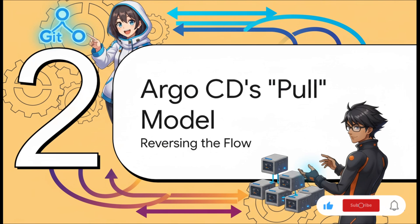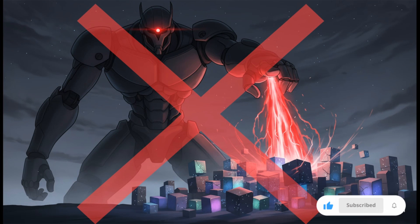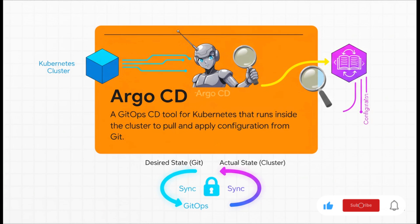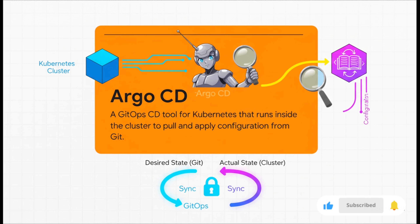And that brings us to the alternative — ArgoCD's pull model. It's such an elegant solution because it solves all these problems just by reversing the flow. Instead of some external force shoving changes into our cluster, we empower an agent that lives inside the cluster to be in charge. That agent is ArgoCD. It's a continuous delivery tool built from the ground up just for Kubernetes. It lives right inside your cluster and its entire purpose is to watch a Git repository and make absolutely sure that your live cluster is a perfect mirror of what's defined in that repo.